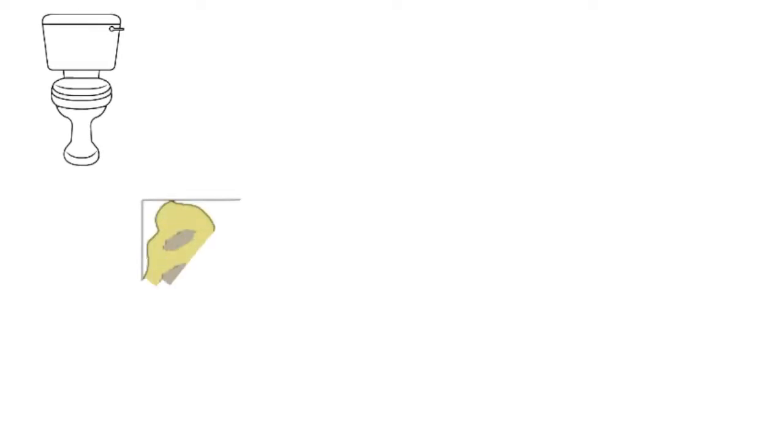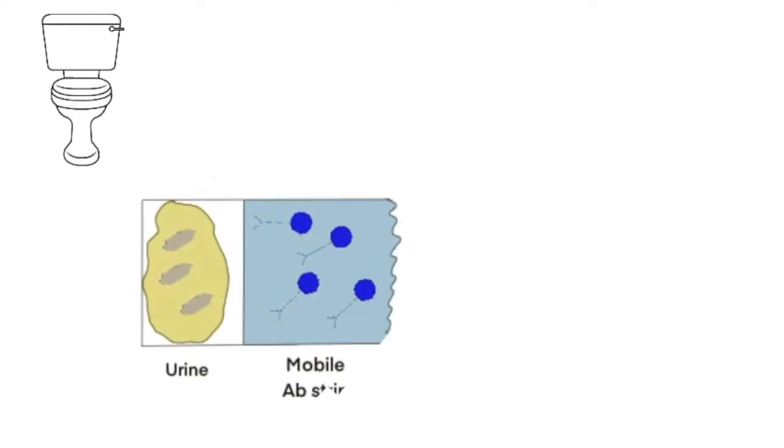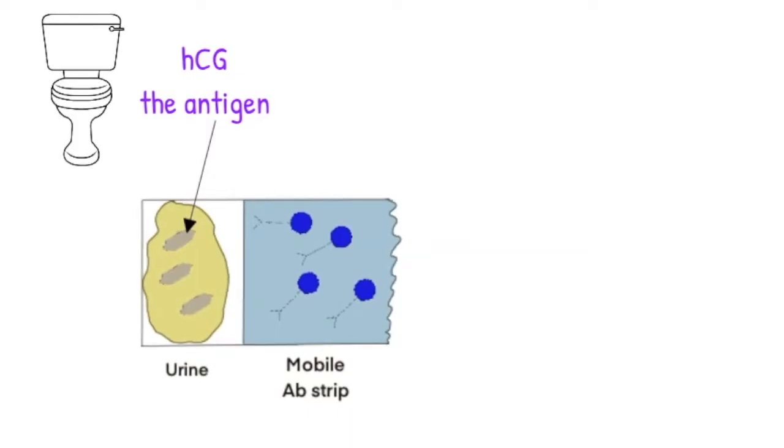To start the pregnancy test, the pregnancy test stick is dipped into urine or it is urinated directly onto. The urine, which may contain HCG molecules, moves along the pregnancy test strip by capillary action.